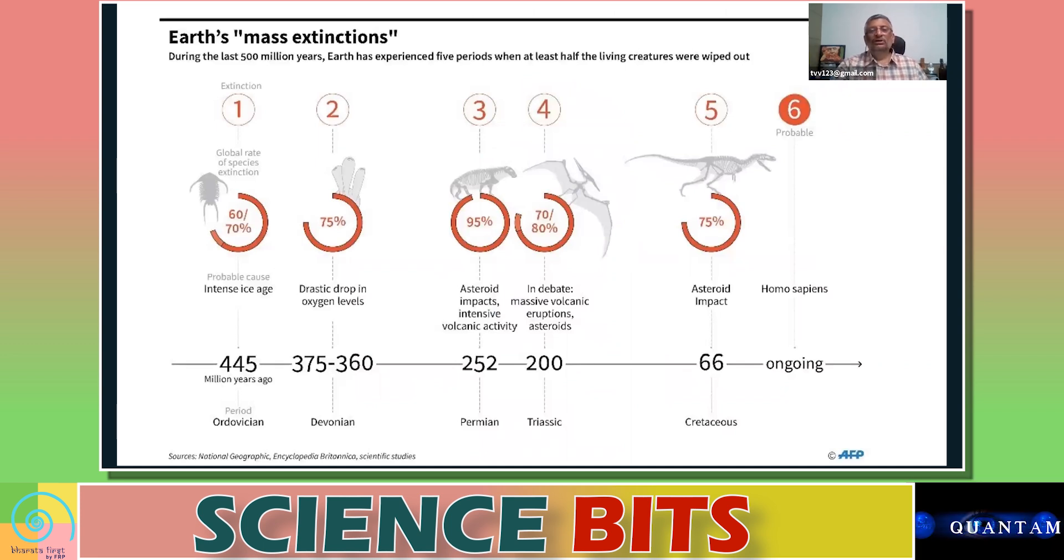So until now, we have identified from looking at the geological record, five mass extinctions. The first one took place about 445 million years ago. Around that time, roughly about 60 to 70 percent of the species that existed at that point of time became extinct at one go.